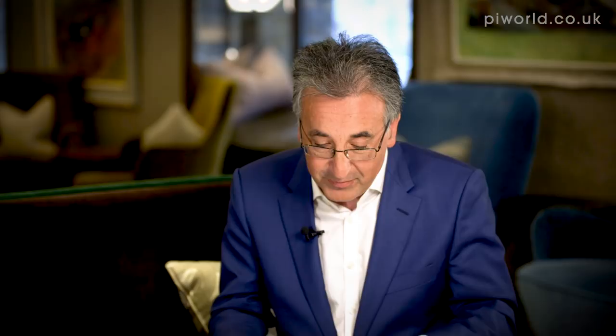Looking at the profit and loss account and balance sheet — what other ratios do you look at? I always like to see businesses that generate high profit margins. Using the Silverdell example, I think high margins demonstrate pricing power and leverage within the business. BioVentix — a company I'm often associated with — has operating margins of 79% for financial year 2017. By comparison, YouGov on its reported numbers is 13.6%. I normally look for margins of over 20% and go out of my way to avoid businesses generating single-digit operating margins.